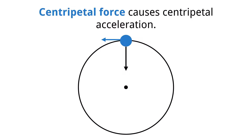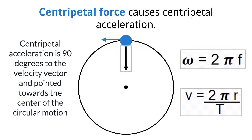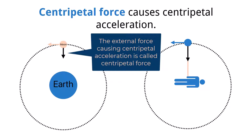Newton's first law tells us that an external force must be present in order to change the velocity of an object. Since in circular motion the velocity is changing due to the constant change in the direction of the object, it must mean that there is an external force applied to the object to cause this change. The force causing this change is called the centripetal force and it causes centripetal acceleration. The centripetal force always points towards the center of the circle, and the centripetal acceleration is always at 90 degrees to the velocity vector. The centripetal acceleration can be found using either the linear speed or the angular speed of the object.